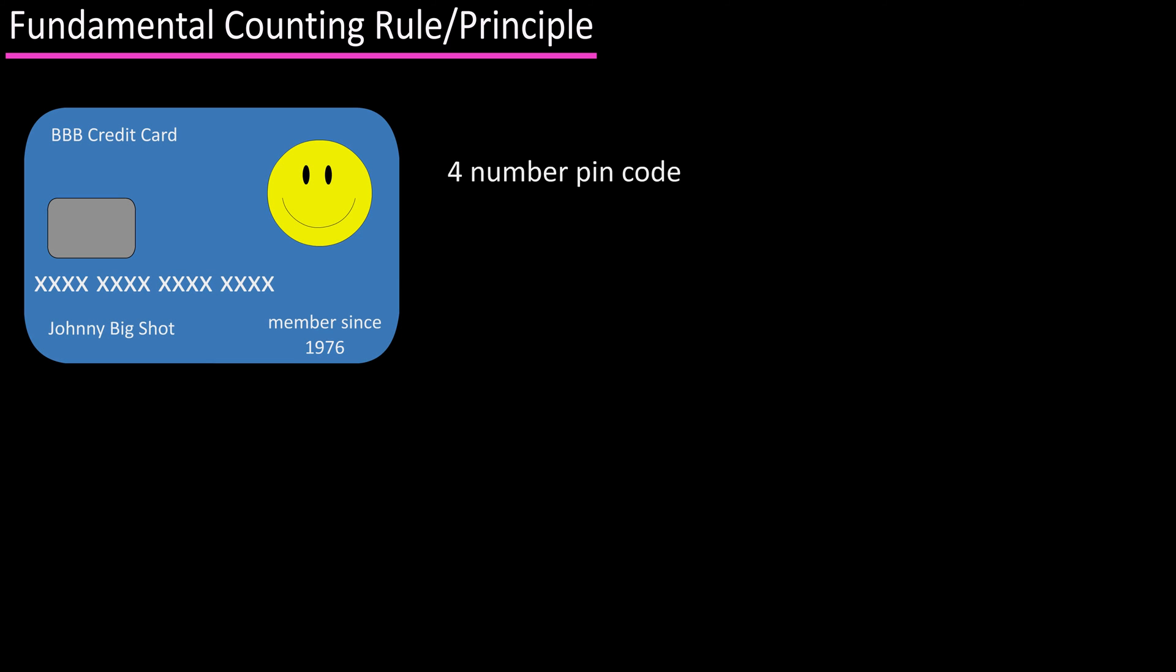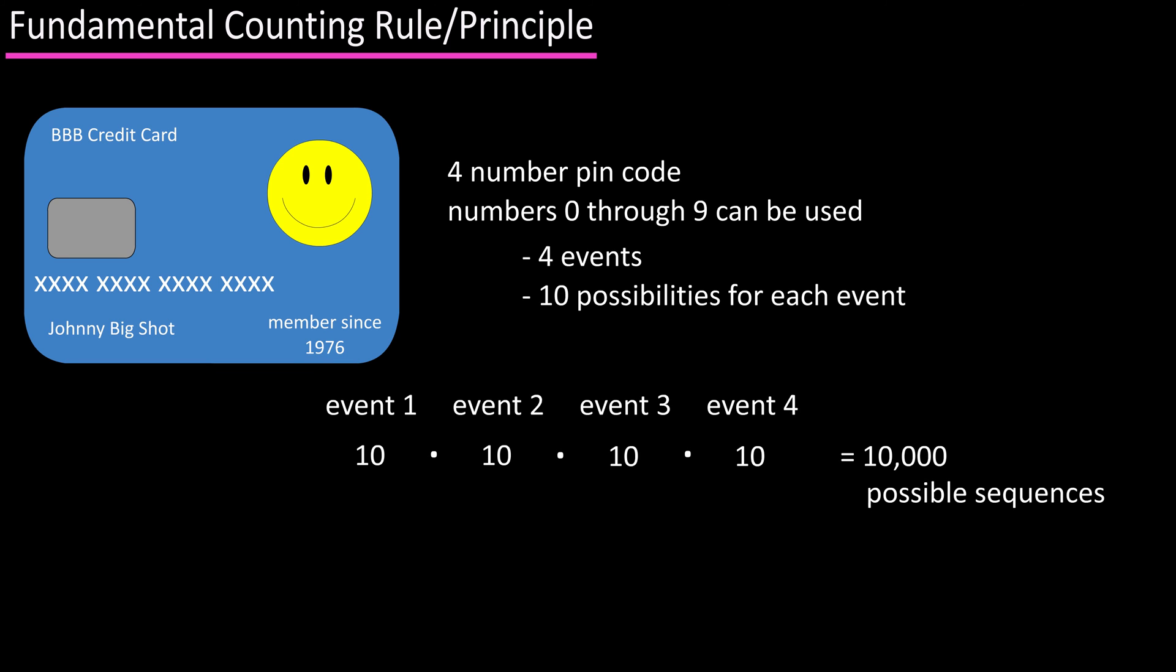One more example is a four number PIN code for a credit card. Numbers zero through nine can be used. So four number code means four events, and zero through nine means ten possibilities for each event. Ten times ten times ten times ten equals ten thousand, so ten thousand possibilities of the sequence.